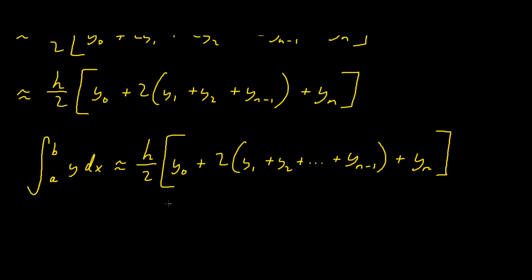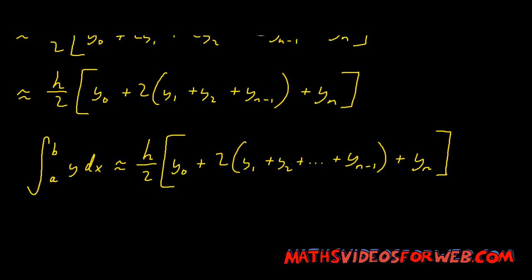This is the trapezium rule formula you can use to get approximate areas underneath curves. H is (B minus A) divided by the number of trapeziums, which you plug into the formula. The more trapeziums you use, the more accurate your result will become — the closer you'll get to the true area underneath the curve from x equals b to x equals a. Thank you very much for watching.